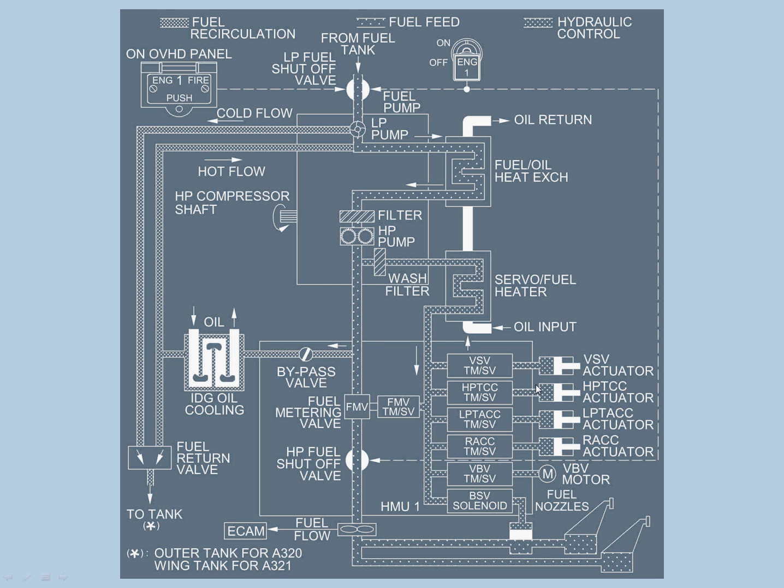Let's talk about the HMU. The HMU is a hydromechanical unit, basically a speed governor that provides automatic speed adjustments. It is operated using fuel-operated servo valves. VSV is variable stator vanes, HPTCC is high pressure turbine clearance control actuator, LPTACC is low pressure turbine active clearance control, and RACC is rotor active clearance control.